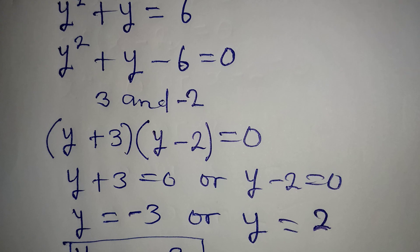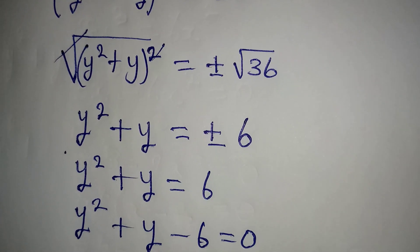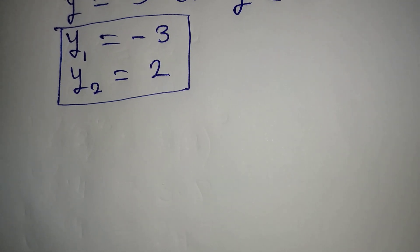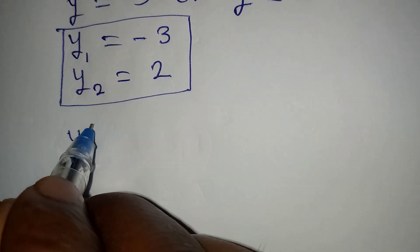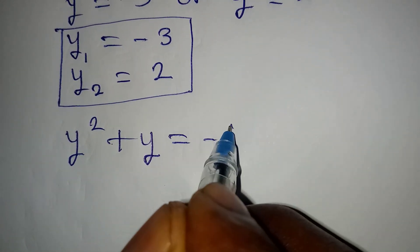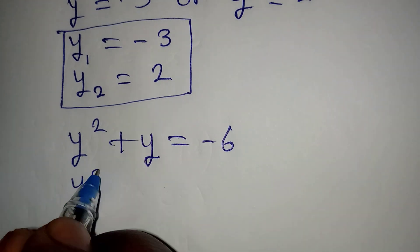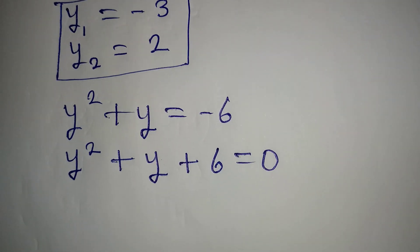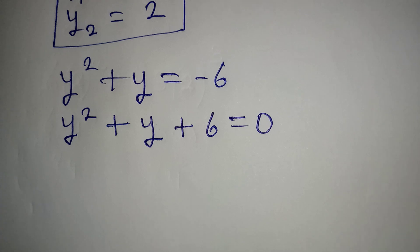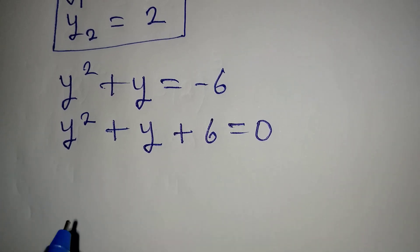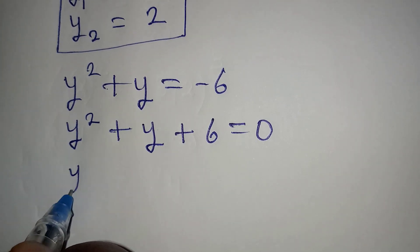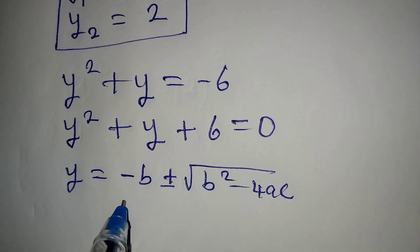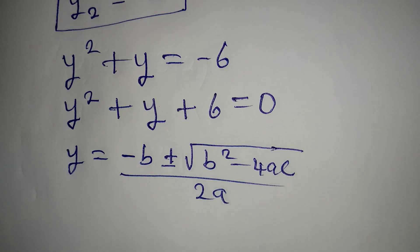Now we proceed to the other equation, which is y² + y = -6. From there we are expected to have two solutions as well. This means y² + y + 6 = 0. To solve this equation we are going to use the quadratic formula method.